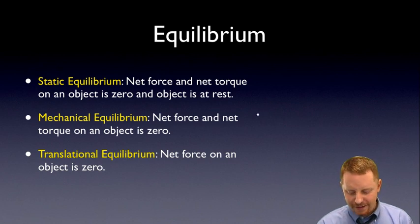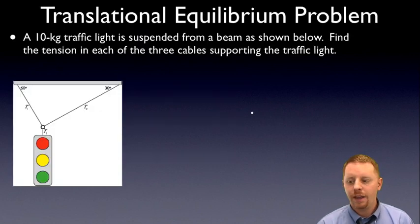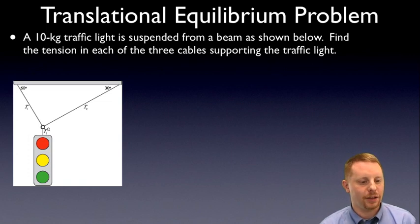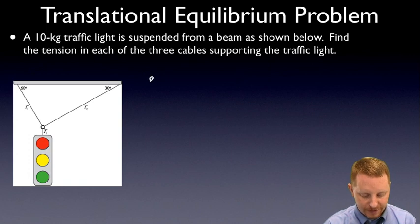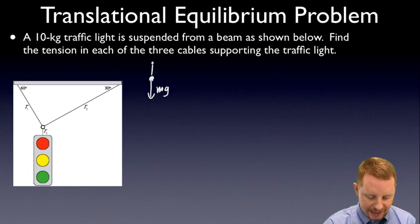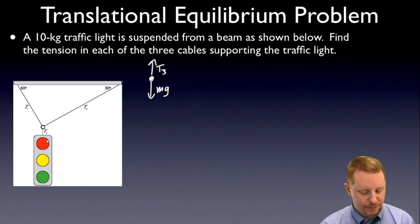So let's take a look at a fairly standard translational equilibrium problem, the one of the traffic light, where we have a 10-kilogram traffic light that is suspended from a beam as shown here in the diagram. Find the tension in each of the three cables supporting the traffic light. We've got T1, T2, and T3. How do we go about solving this? Well, I always like to begin with the diagram. And we'll start with the free body diagram, probably for the traffic light. So there's our traffic light. We have the weight or gravitational force of the earth on the traffic light, mg. And we must have some tension, T3, in the cable.